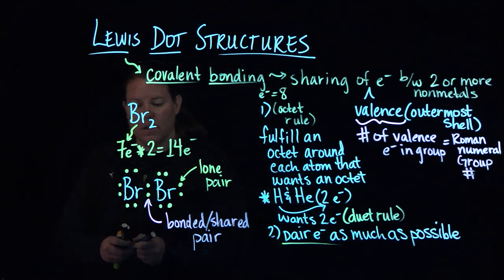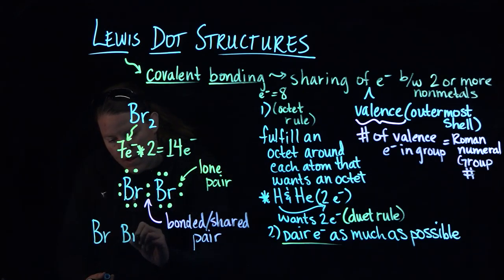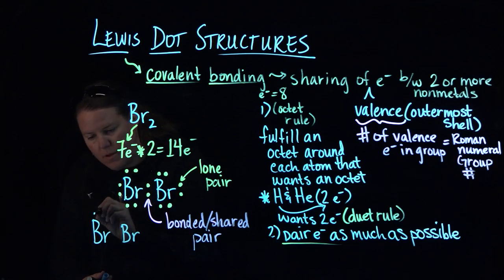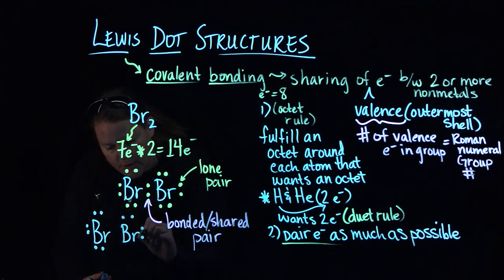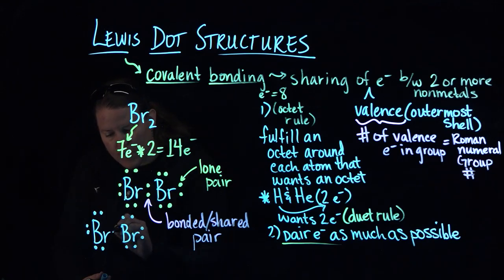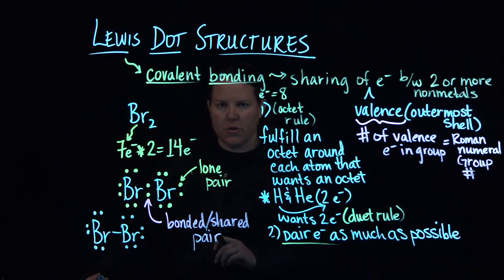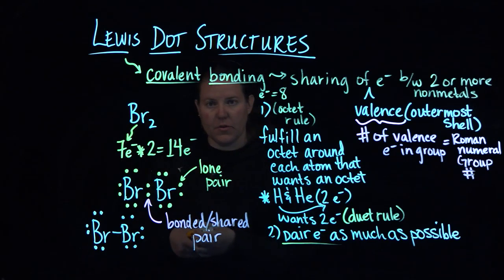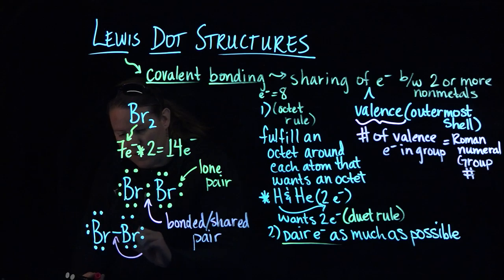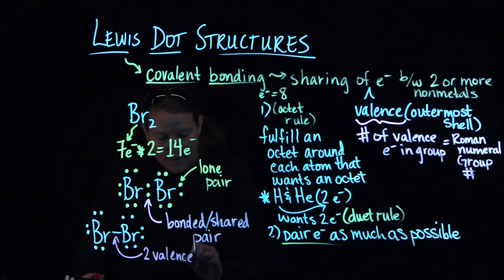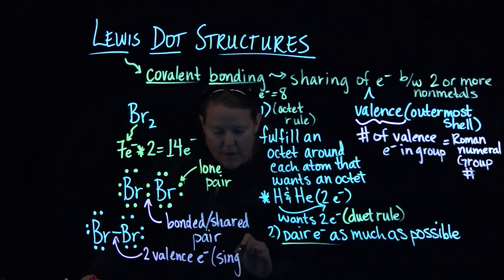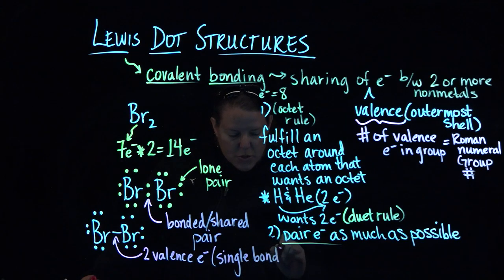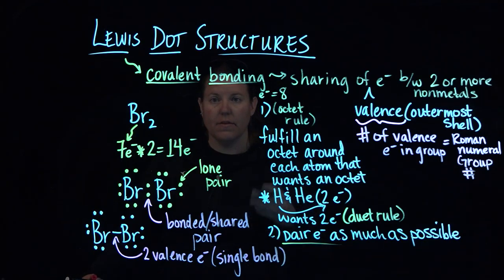Now there are many ways to draw this. You can of course do what I just did. You could draw the Lewis dot structures with all dots. You could do it with horizontal dots or vertical dots, or you could do it with a line as the bonded or shared pairs. How many electrons, valence electrons, are in that line? Two valence electrons, right? And that line gives rise to the reason why this is called a single bond. A single bond has two shared electrons. A double bond would have two lines, four shared electrons. And a triple bond would have three lines in between those two elemental symbols and would have six shared electrons.